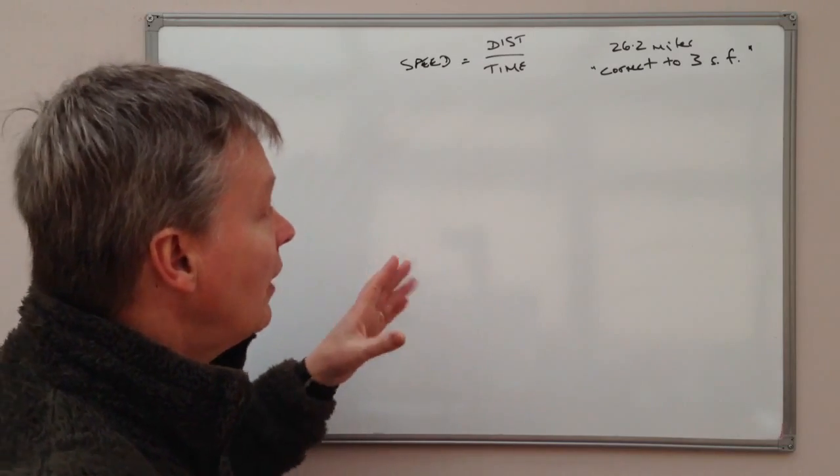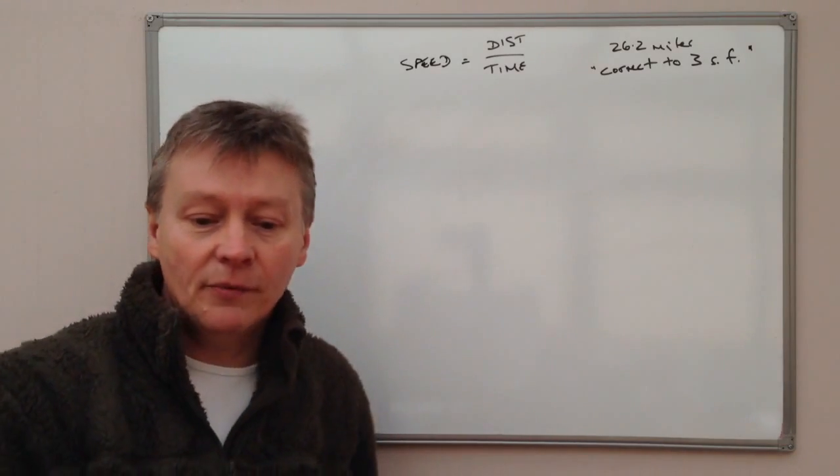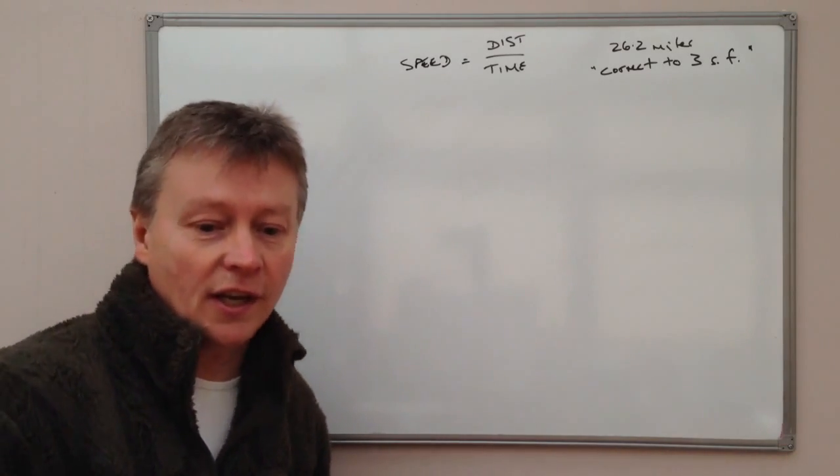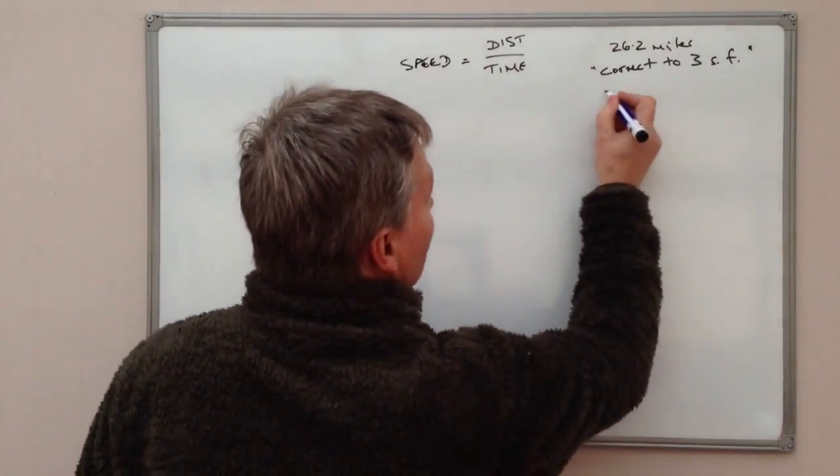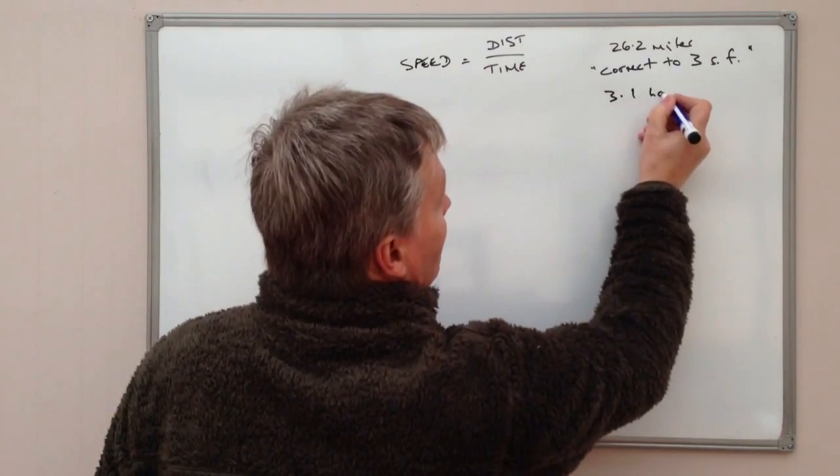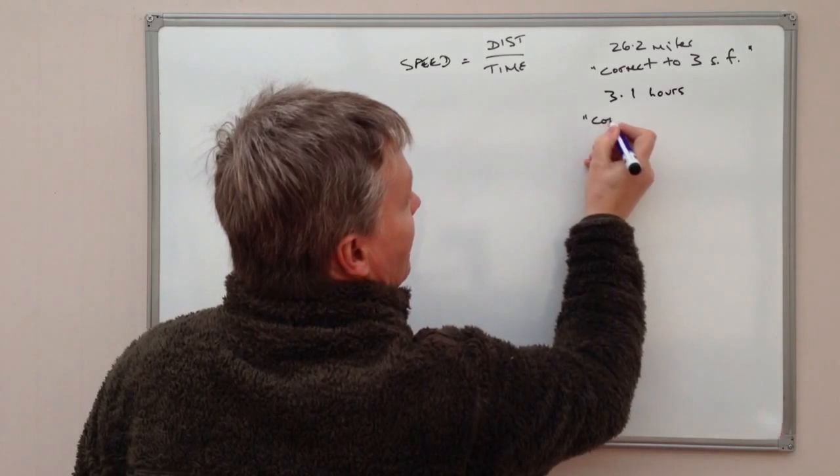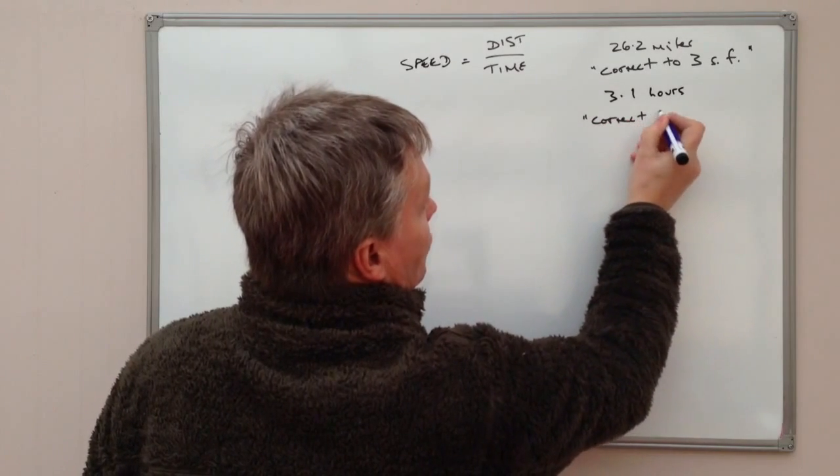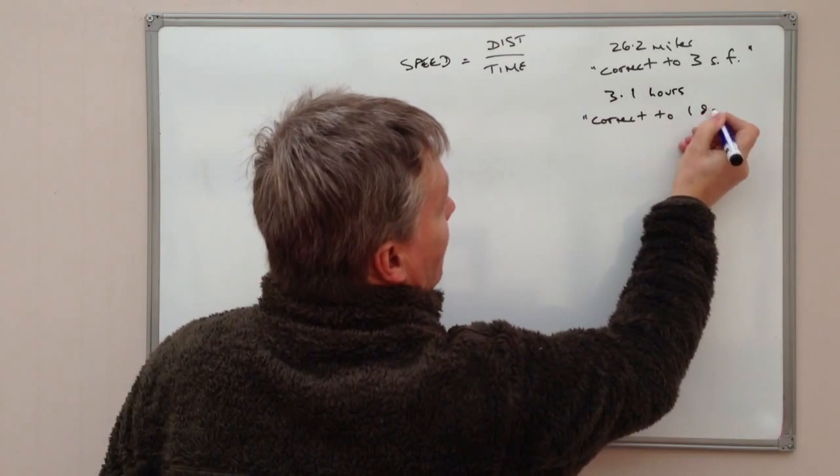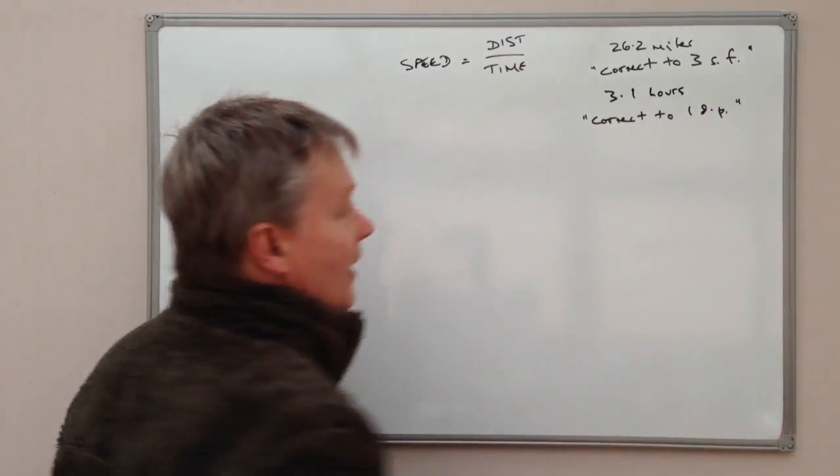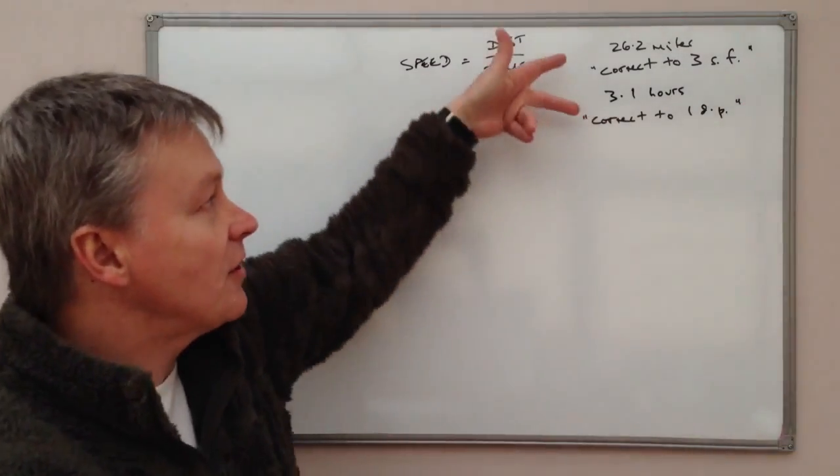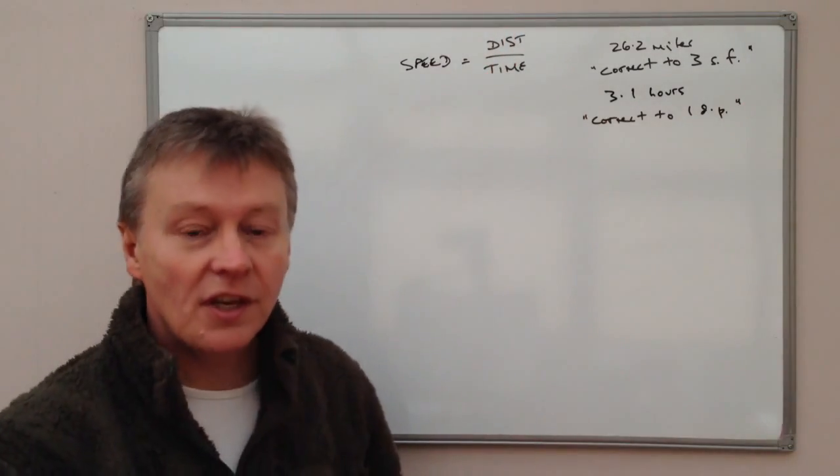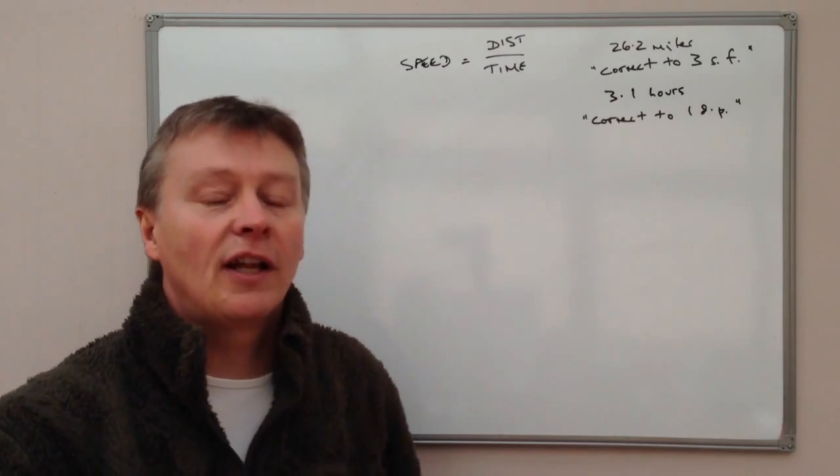What that does is it tells you that it's a bounds question. Similarly with the time, the time that she takes is 3.1 hours, and that is correct to one decimal place. So in other words, we have to do something with these numbers in order to make our calculations.